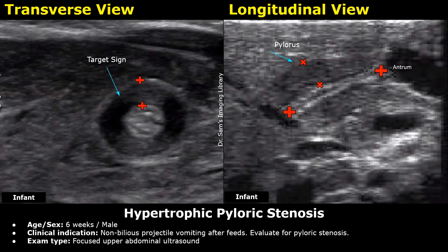The report starts with the patient information. This patient is an infant aged 6 weeks, male. After the name, age, and date, we write the clinical indication. The indication here is non-bilious projectile vomiting after feeds. Evaluate for pyloric stenosis. Next, we write the exam type: focused upper abdominal ultrasound.